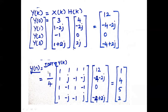Y of n is equal to the IDFT of Y of k. When writing the IDFT formula, we use 1 by N, where N is the total number of samples, which is 4. Writing the twiddle matrix and multiplying with 12, minus 4 minus 2J, 0, minus 4 plus 2J gives the output 1, 4, 5, 2. This output can be verified using the simplest method.